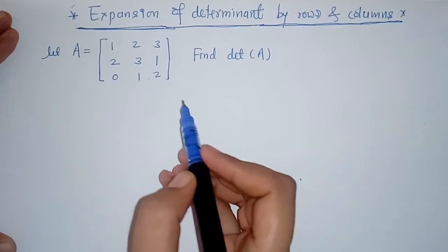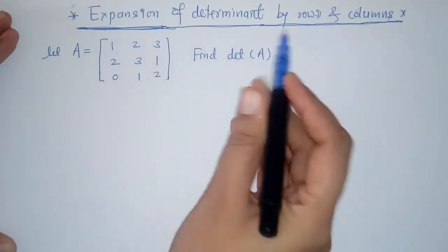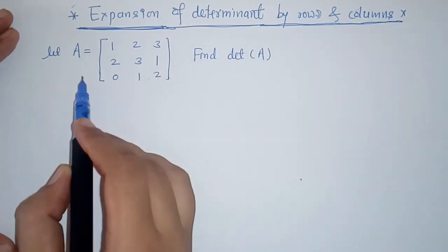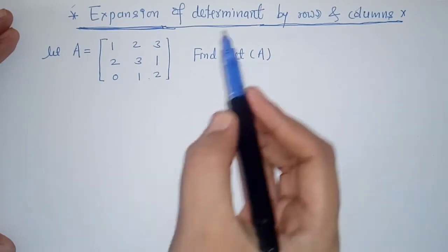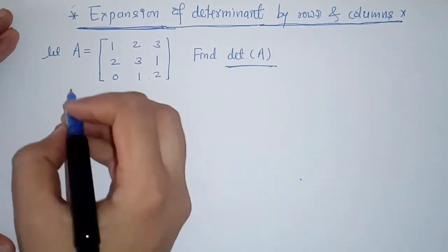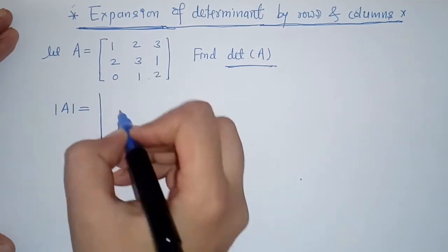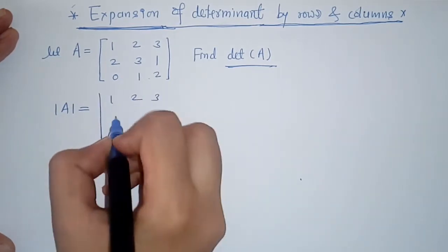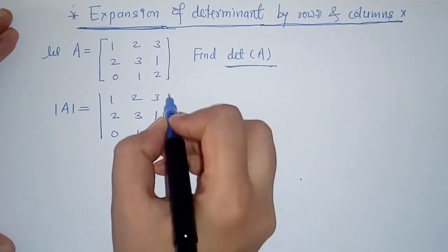Hello everyone, today we are going to see expansion of determinant by rows and columns. Here we have given matrix A and we have to find the determinant of A. First we will write this matrix in determinant form.